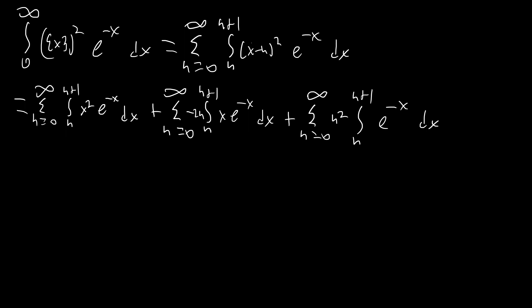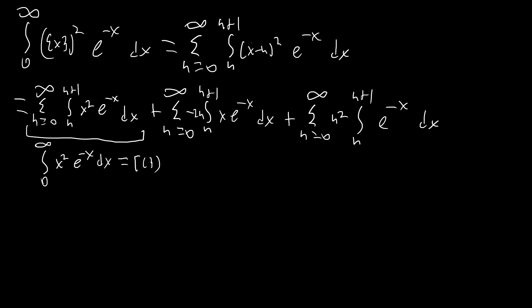The first sum has no n in the integrand, so we can recombine all integrals to get the integral from 0 to infinity of x squared e to the negative x dx, which equals gamma of 3, and that's equal to 2. For the next integral, we need to do integration by parts. Using the DI method, we have x and e to the negative x. This gives us x e to the negative x and negative e to the negative x as our terms, evaluated at the bounds n plus 1 and n.